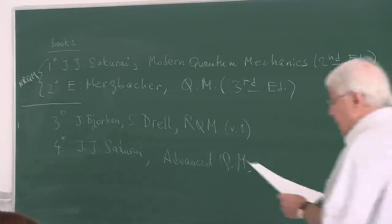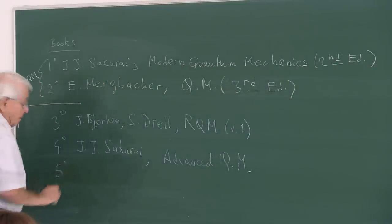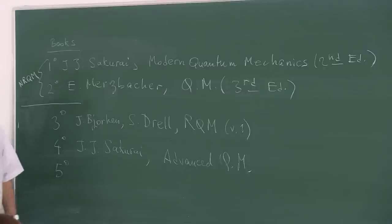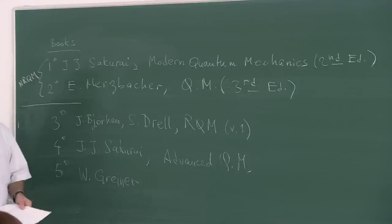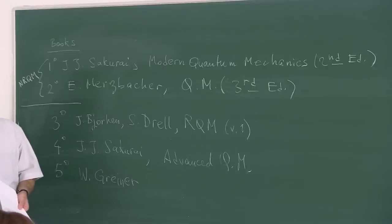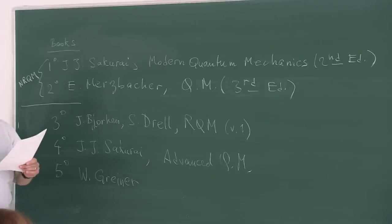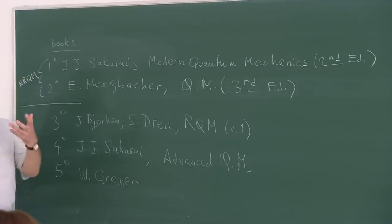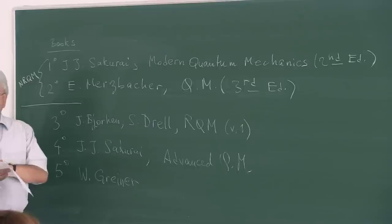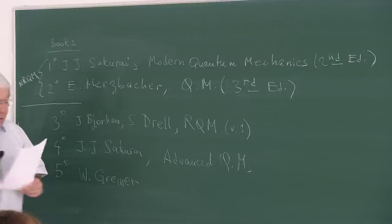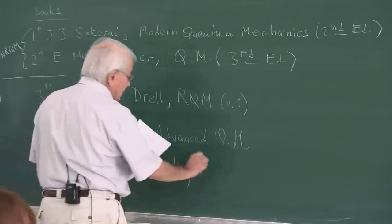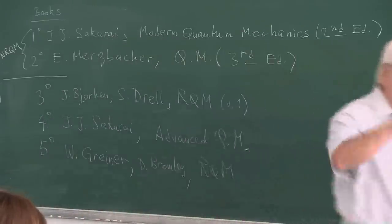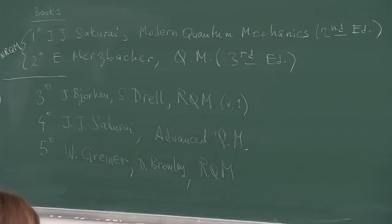The title Advanced Quantum Mechanics is a bit misleading — it is really relativistic quantum mechanics. The last one I'd like to refer to is a rather strange book, strange in the following sense: it's pedagogically very useful because it's written by someone who has written books on essentially all fields of physics, from statistical mechanics to electrodynamics and several volumes in quantum mechanics — symmetries, introduction, relativistic, and quantum field theory.